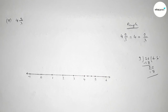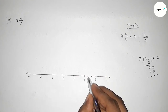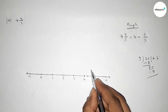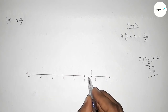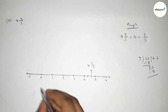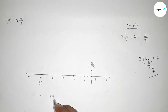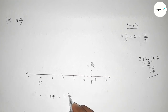Marking the numbers with deep color: this is four, and now counting two over three — this is two over three — so total this is four and two over three on the number line. Taking point O and point P, therefore OP equals four and two over three units. That's all, thanks for watching.